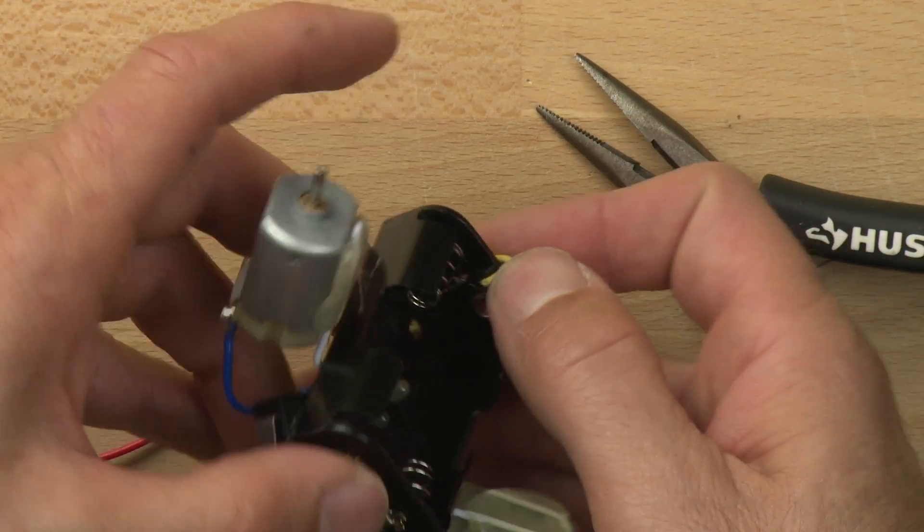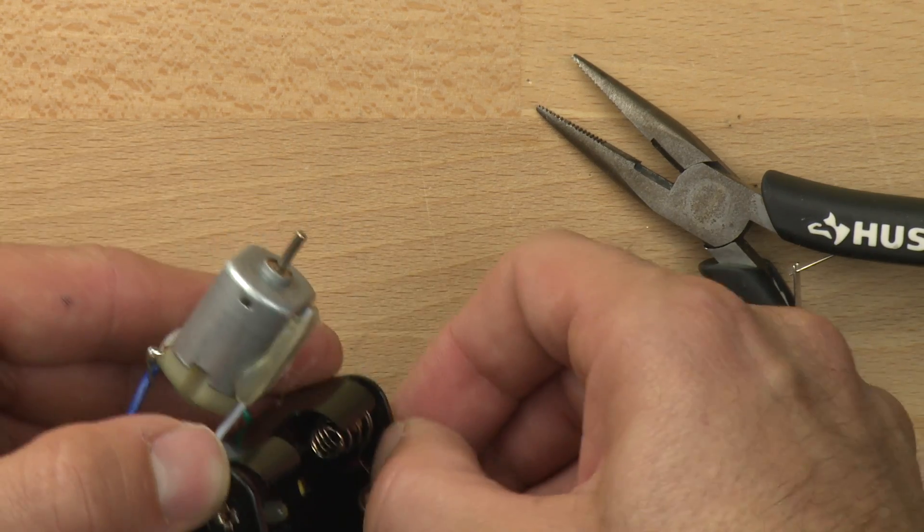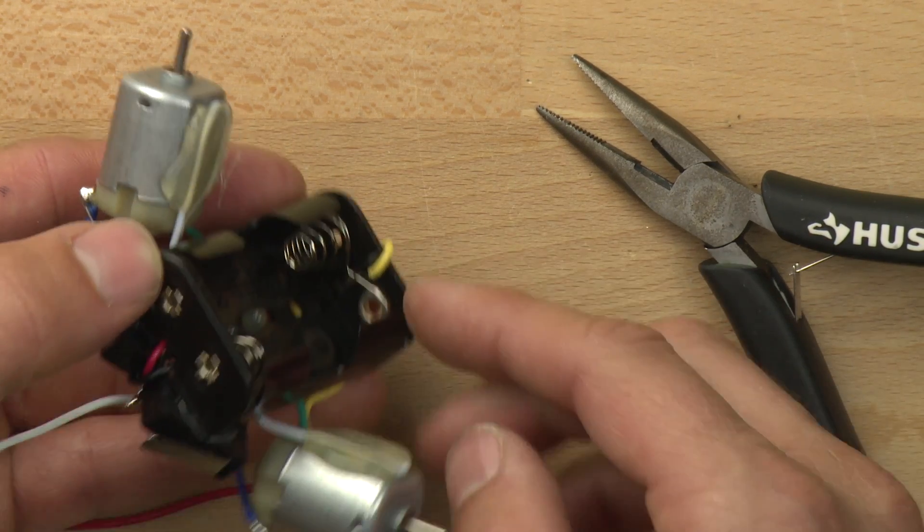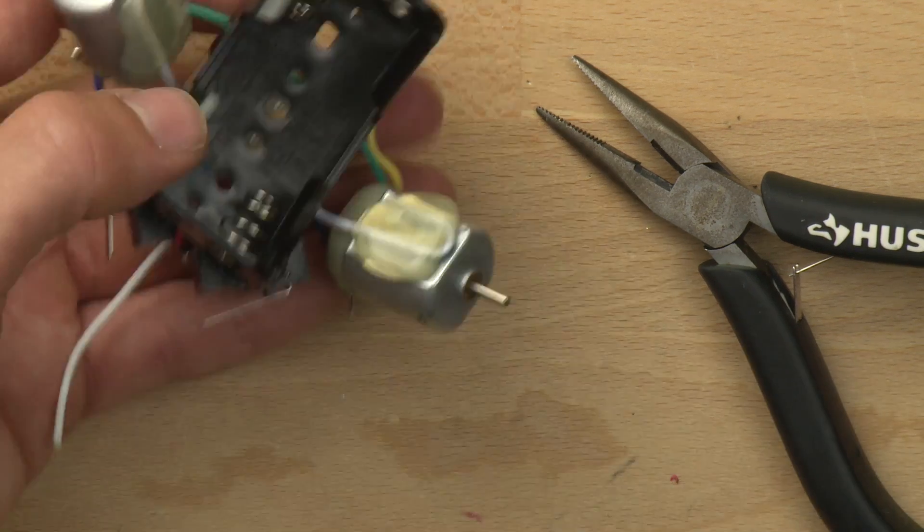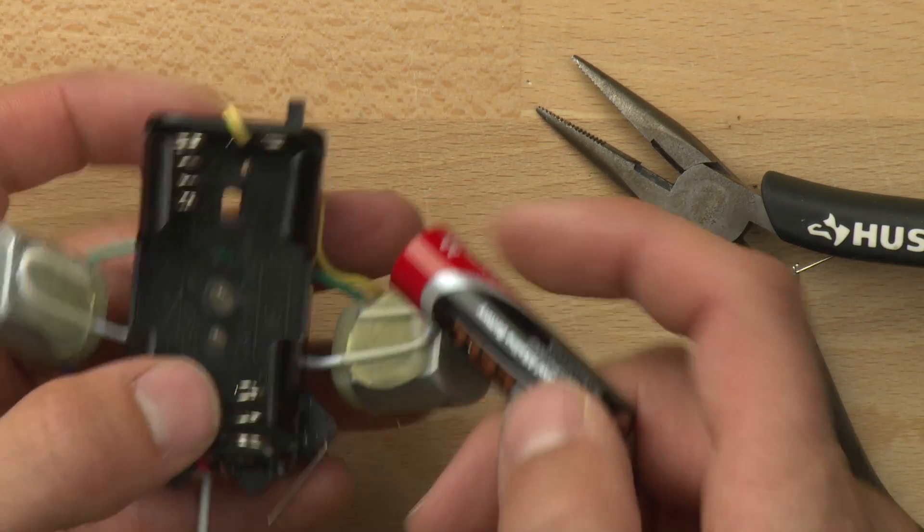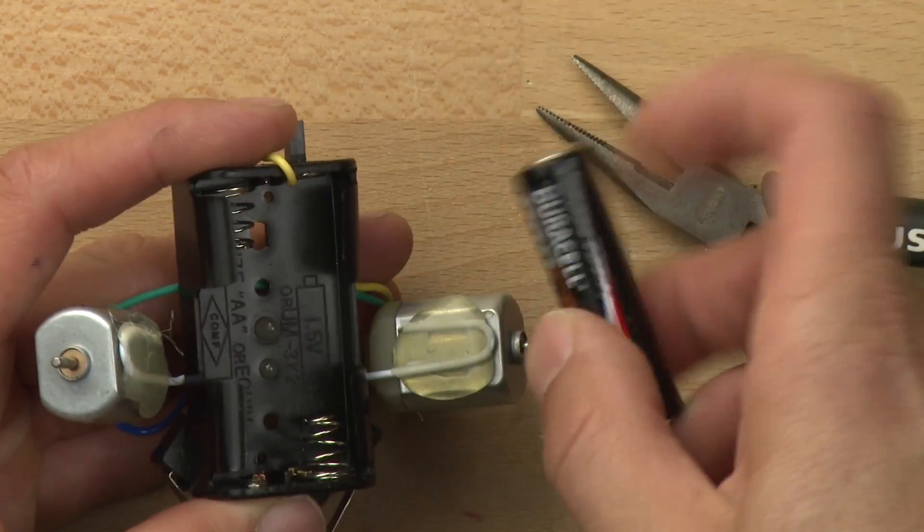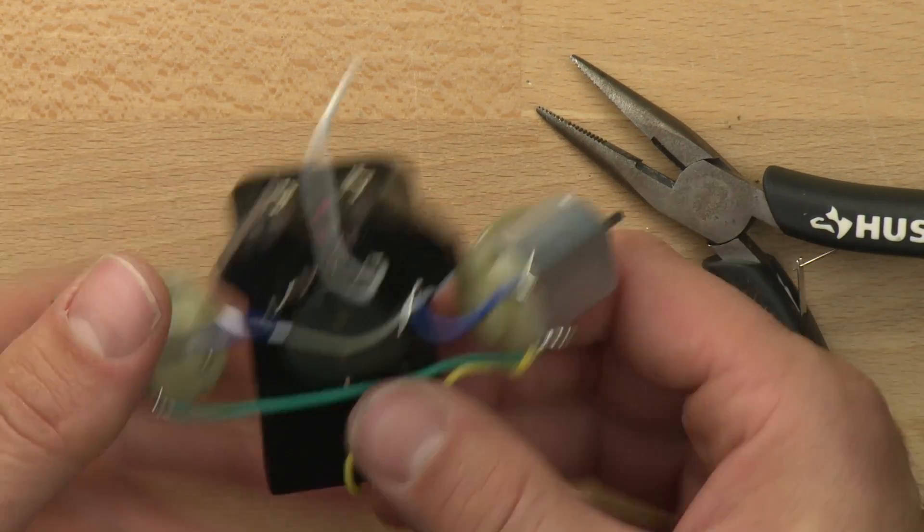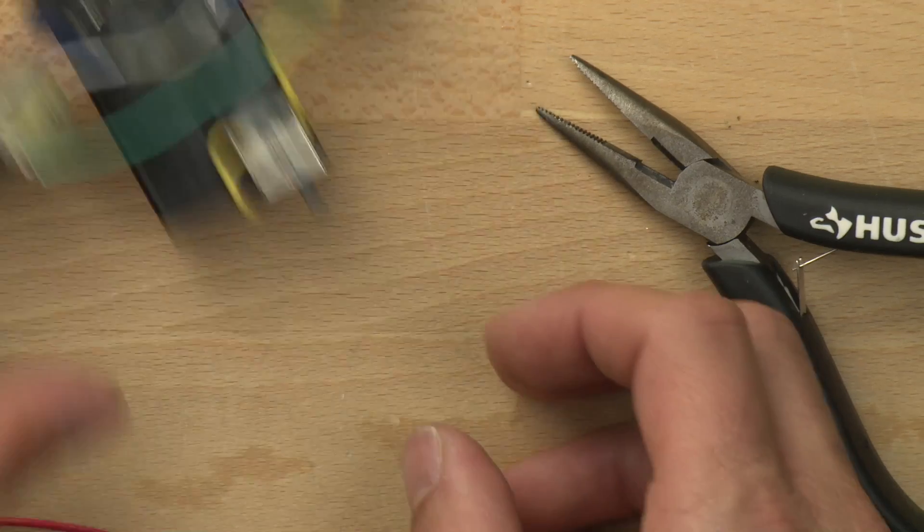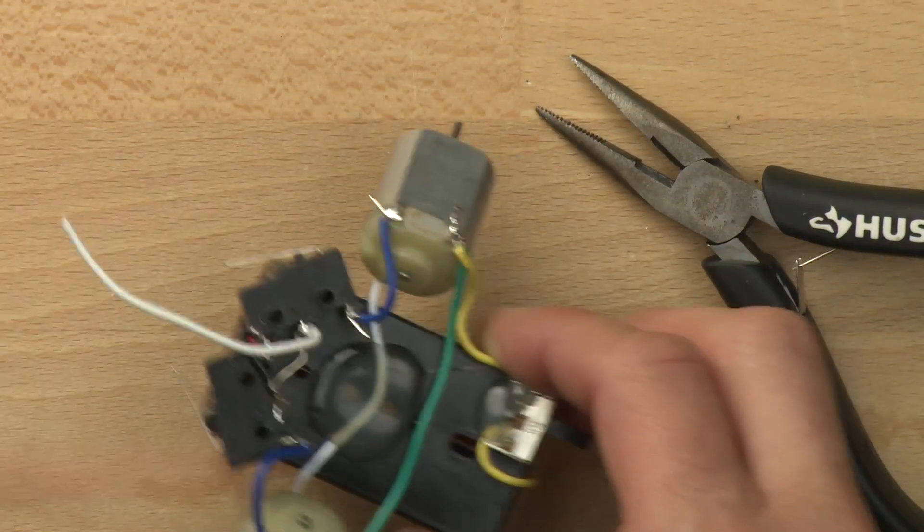All right, so that spring should snap back and pinch that wire against the inside of the battery holder. Then we can put our batteries back in. Whoa, there it goes! You can hear it running.